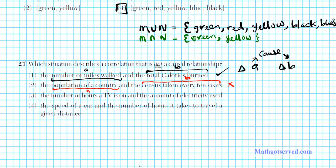Now, let's look at option 3. The number of hours on a TV, that's A, and then the amount of electricity used, that's B. If you watch a little TV, does that affect your light bill? Absolutely. Your electric bill, fewer electricity is used. And then if you watch a lot of TV, then you use more electricity. So this is a causal relationship.